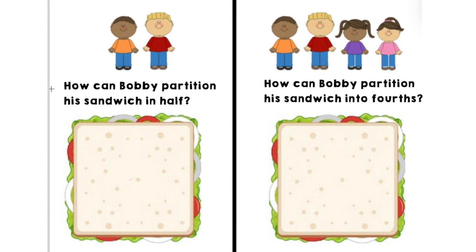Bobby could cut his sandwich in half vertically. Watch me as I cut the sandwich in half vertically — remember vertically means up and down. Wait — you say that the sandwich is not cut in half? Well, I see two parts. Oh, that's right. In order for something to be cut in half, it has to be two equal parts, and this part is way smaller than this part, so they're not equal. Thank you, rock stars, for correcting me.